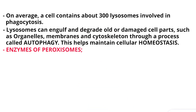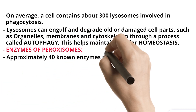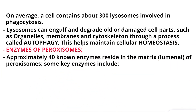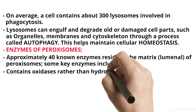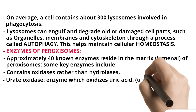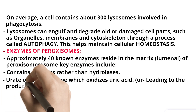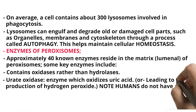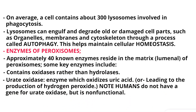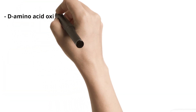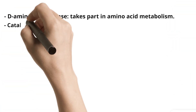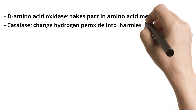Enzymes of Peroxisomes: Approximately 40 known enzymes reside in the matrix (luminal space) of peroxisomes. Some key enzymes include: oxidases rather than hydrolases. Urate oxidase — an enzyme which oxidizes uric acid, leading to the production of hydrogen peroxide. Note: humans do not have a functional gene for urate oxidase. D-amino acid oxidase — takes part in amino acid metabolism. Catalase — converts hydrogen peroxide into harmless water and oxygen.